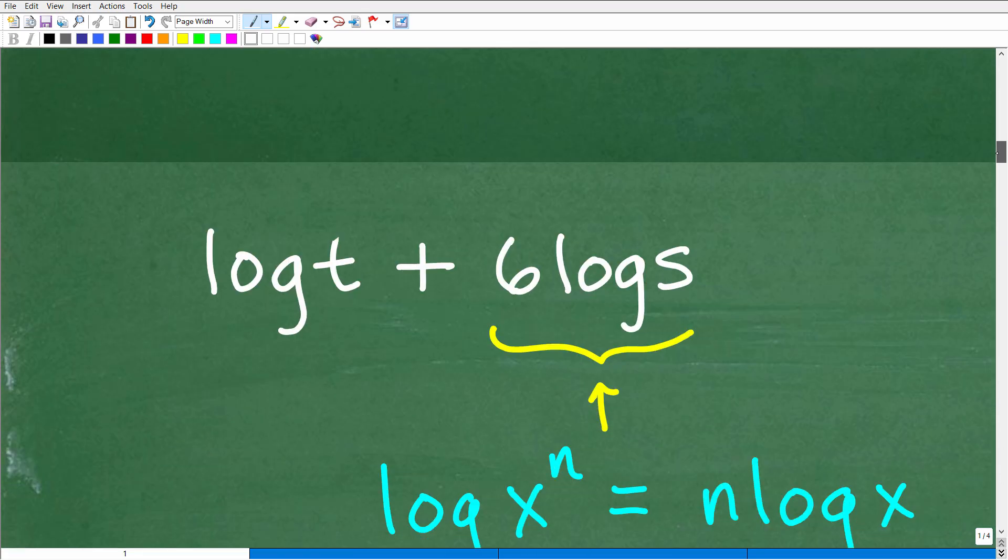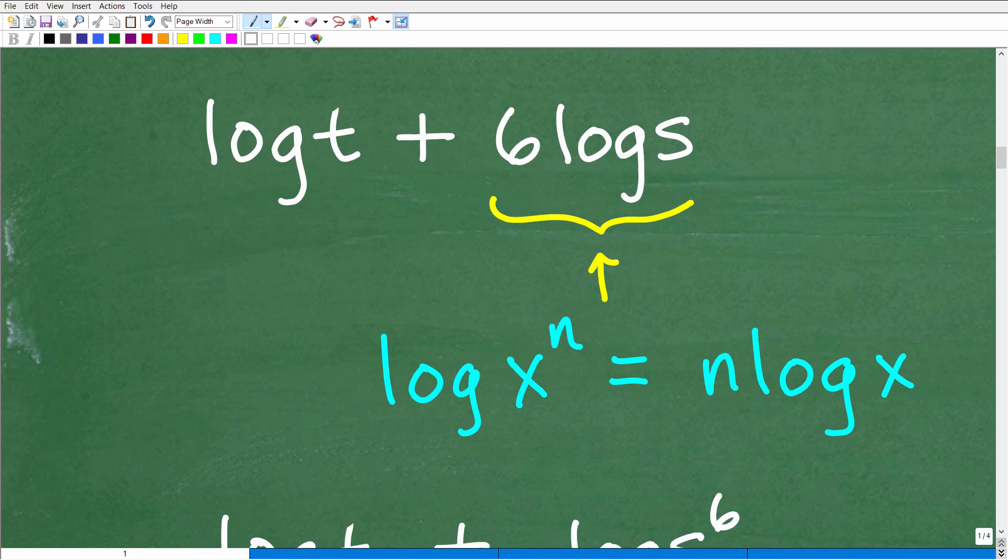So let's go ahead and get into condensing this expression. We have log T plus 6 log S. The best way to do this, in my opinion, is you first want to take care of any power situations. So here we have 6 log S. This 6, we can put right up here to this S base. So I'm going to suggest that the first thing you do when you're condensing expressions is to deal with any powers. If you see coefficients in front of these log expressions, just move those coefficients up as exponents.